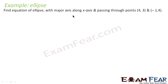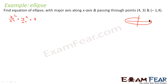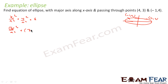In this question we have to find the equation of an ellipse whose major axis is along the x-axis and which passes through (4, 3) and (−1, 4). Since the major axis is along the x-axis, the equation is x²/a² + y²/b² = 1. Substituting (4, 3): 16/a² + 9/b² = 1. This is equation 1.